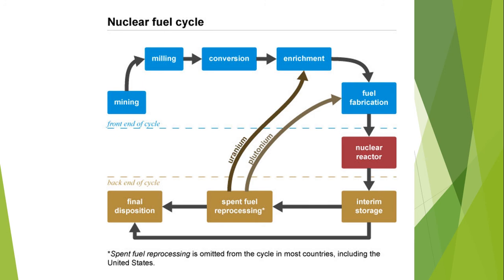The next is the conversion process. The powder obtained by milling and crushing the material is now converted. The conversion process basically consists of removing impurities. The impurities are removed using very strong acids, which include hydrofluoric acid, one of the strongest acids present on earth.